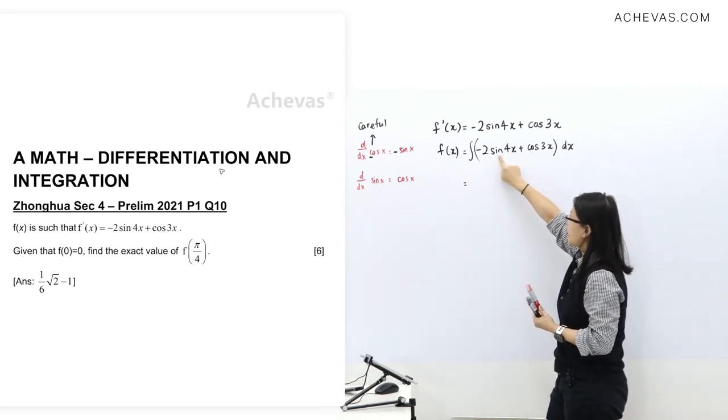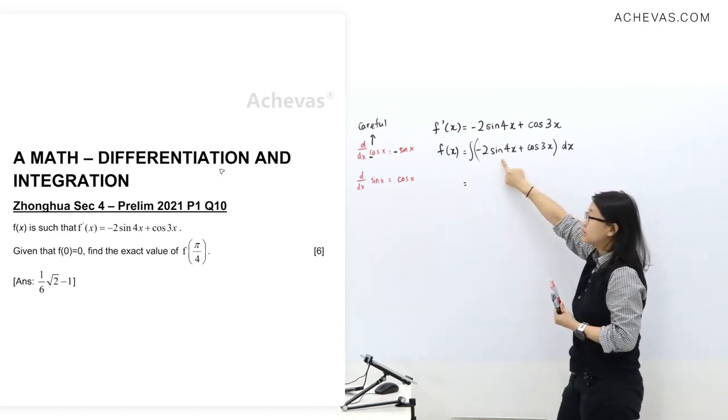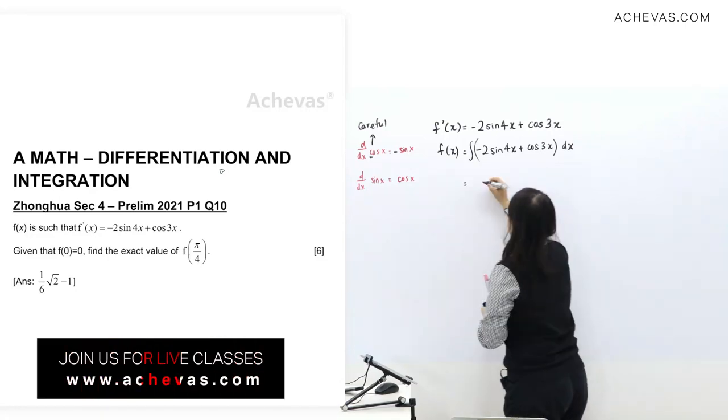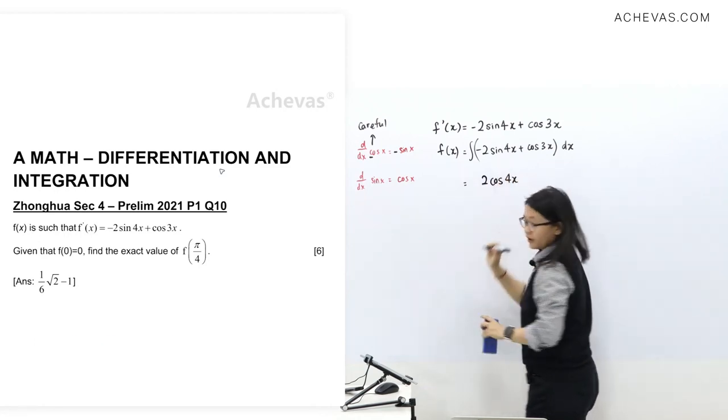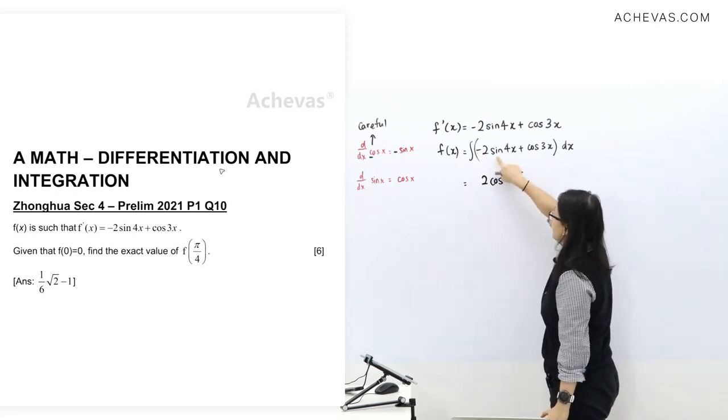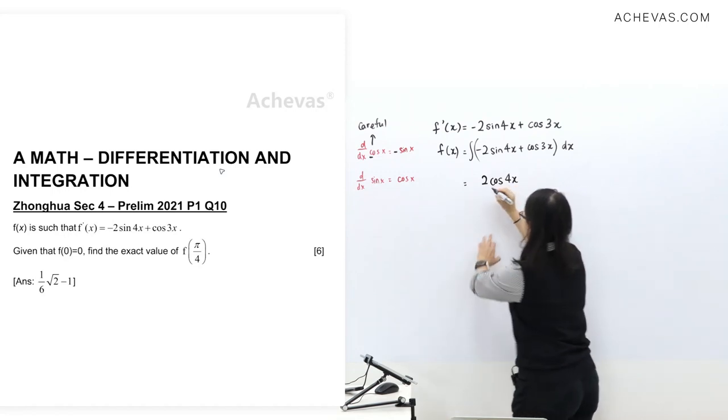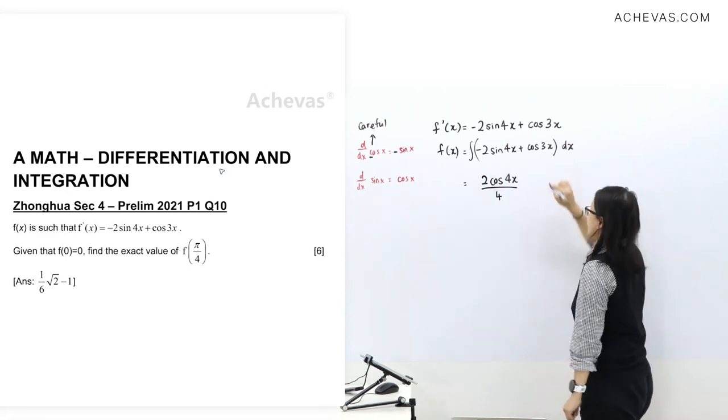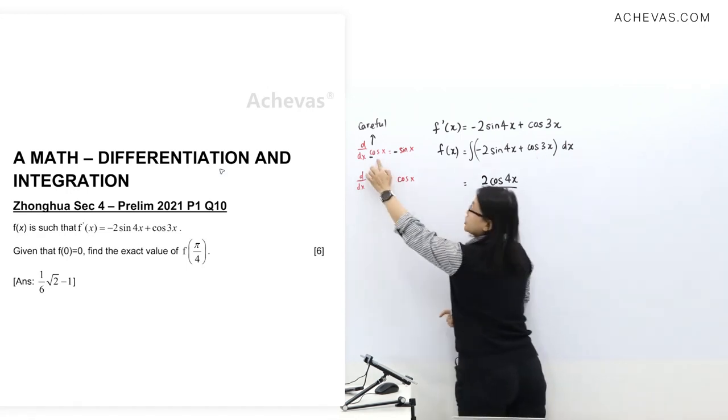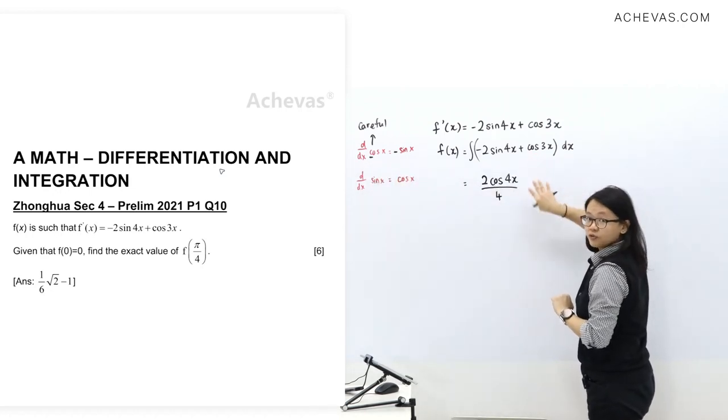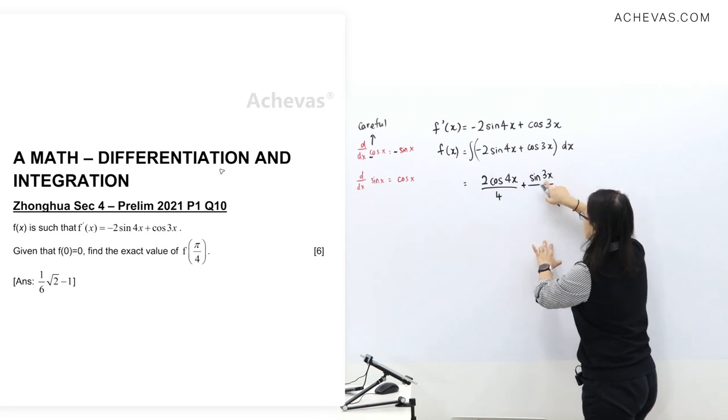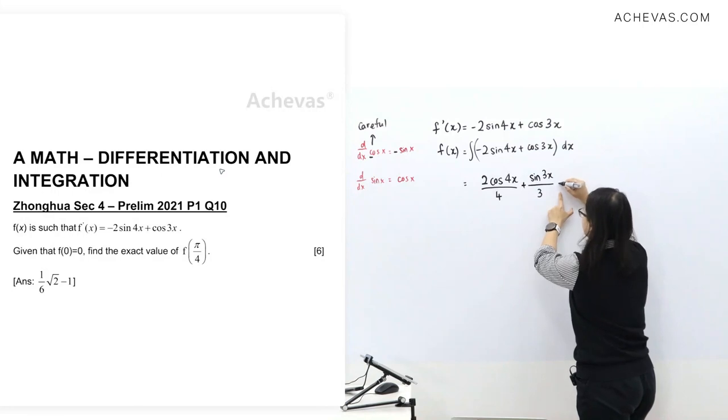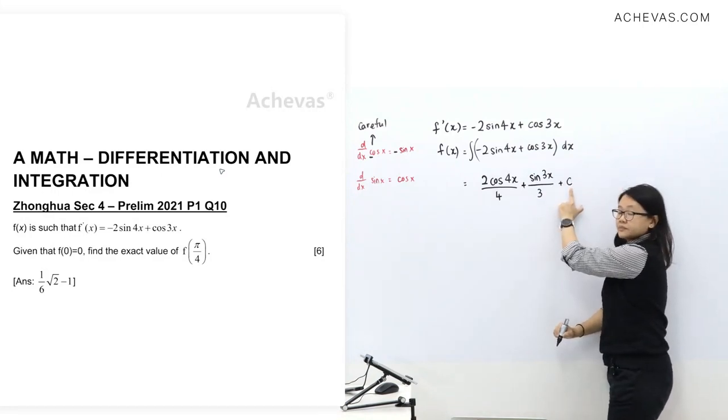So now we'll get 2 cos 4x. We are changing the sine when we integrate sine, you become cos. There's extra 4 here, you have to divide by 4. Integration of cos, differentiation of cos changes sign. Integration of cos remains the same sine, so I'll put a positive, cos becomes sine, divide by this 3 here. And it's integration, so we have a constant here. This is f(x).